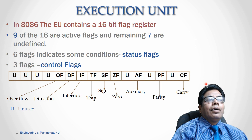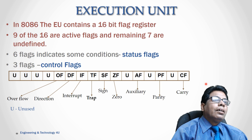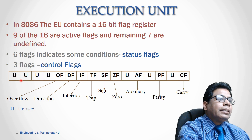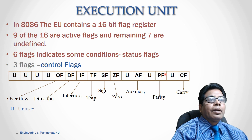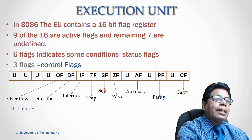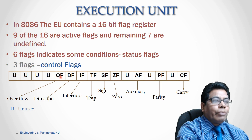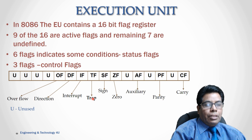The last part of the execution unit is the flags. In 8086, the EU contains a 16-bit flag register. Out of these 16 bits, 9 are active flags and 7 are undefined (marked as U in the figure). Of the 9 active flags, 6 are status flags: carry flag, parity flag, auxiliary carry flag, zero flag, sign flag, and overflow flag. The remaining 3 are control flags: direction flag, interrupt flag, and trap flag. We will study the details in the next video.